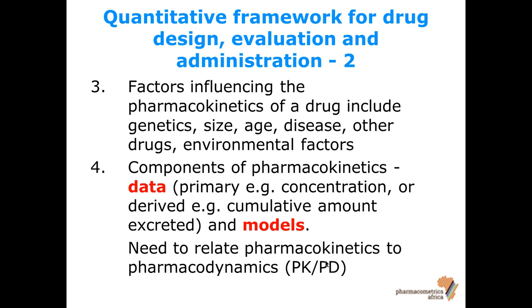To describe pharmacokinetics quantitatively we need data, typically plasma or blood concentrations, drug in urine, and possibly metabolite measurements. To understand that data we have to use models of the pharmacokinetics to interpret it and understand the behavior of the drug in the body. Ultimately we want not only to interpret the pharmacokinetics but also to understand the drug action - the pharmacology - and so we need to relate the plasma or blood concentration to the pharmacological outcome, which is the area of pharmacodynamics.